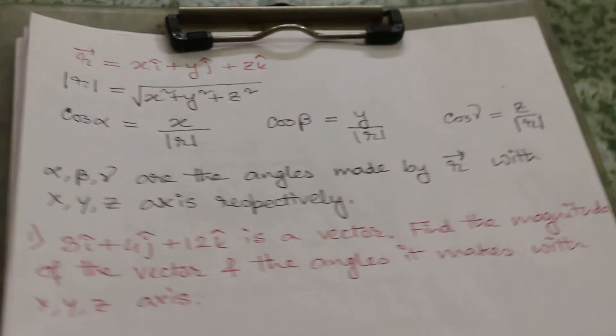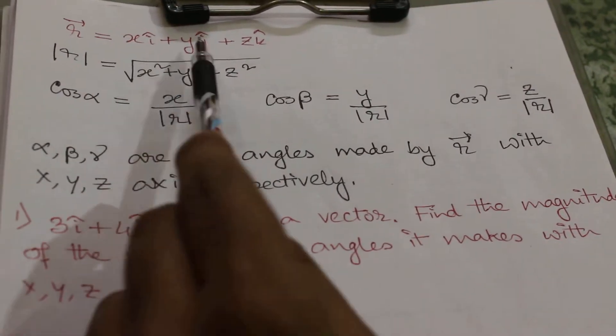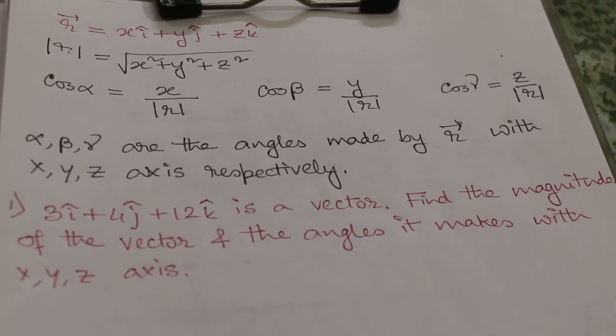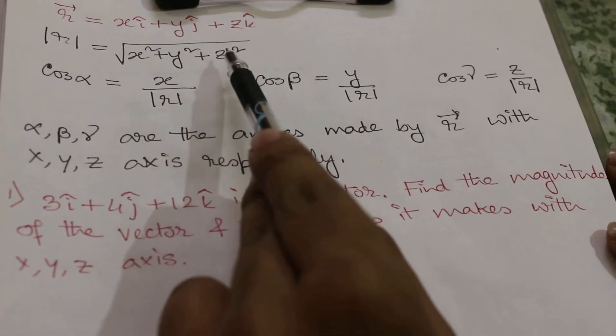Vector r is equal to x i cap plus y j cap plus z k cap. Now if we have to get its magnitude, which is equal to mod of r, that is equal to root over x square plus y square plus z square.